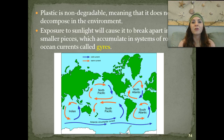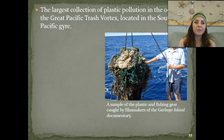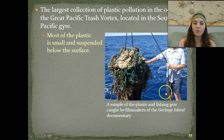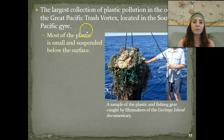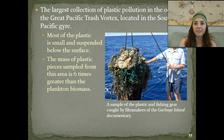All of these smaller pieces accumulate in systems of rotating ocean currents called gyres. The largest collection of plastic pollution in the ocean is in the Great Pacific Trash Vortex, located in the South Pacific Gyre. Most of the plastic is small and suspended below the surface, and the mass of plastic pieces sampled from this area is six times greater than the plankton biomass.